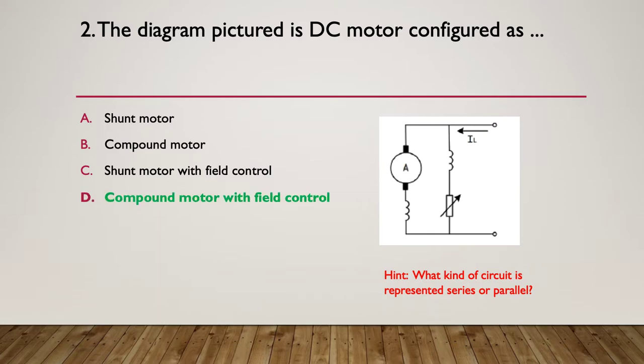So it's compound because the field winding has two parts, it has a shunt part and a series part. Therefore it is compound, but it also still has a variable resistor, meaning that there's also got some field control. So it's compound motor with field control.